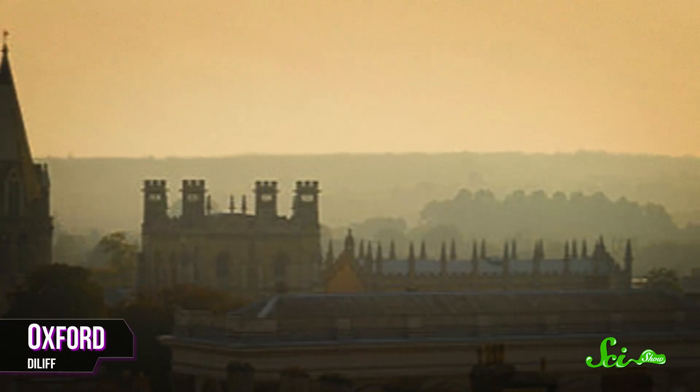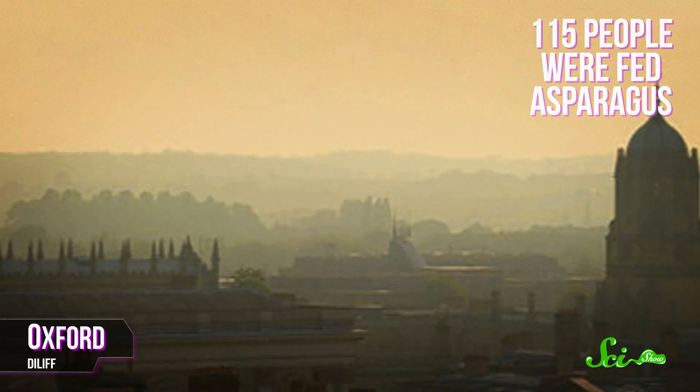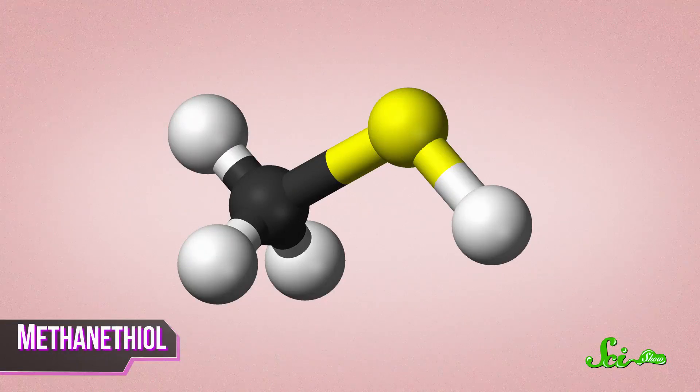To get to the bottom of the issue, in 1956, two biologists at Oxford conducted a study in which 115 people were fed asparagus and then had their urine analyzed. The results showed that some samples did appear to smell while others didn't. And the urine specimens that had the unique scent all contained the same compound: methanethiol.